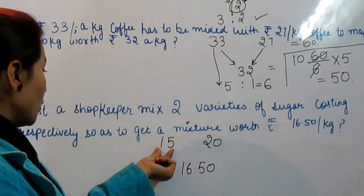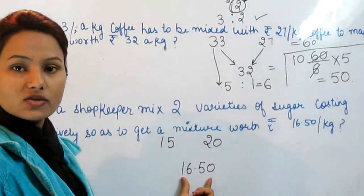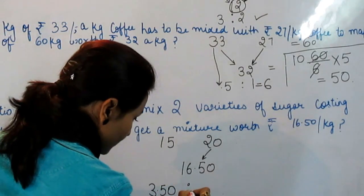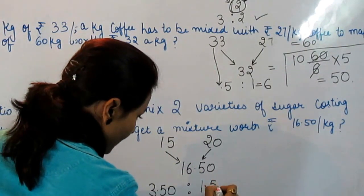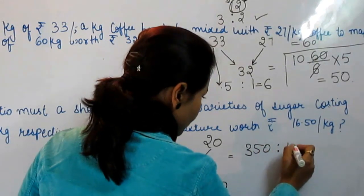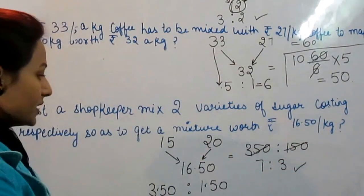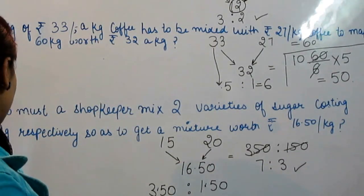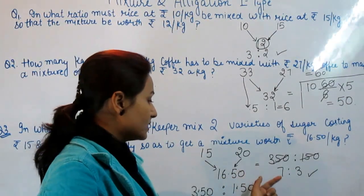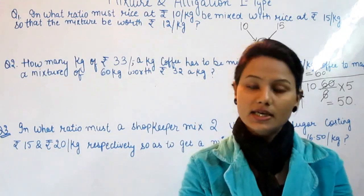We have sugar at Rs. 15 and Rs. 20, and we want the mixture at Rs. 16.5. Applying alligation diagonally, we get a ratio of 7:3. This is the second type of mixture and alligation case.